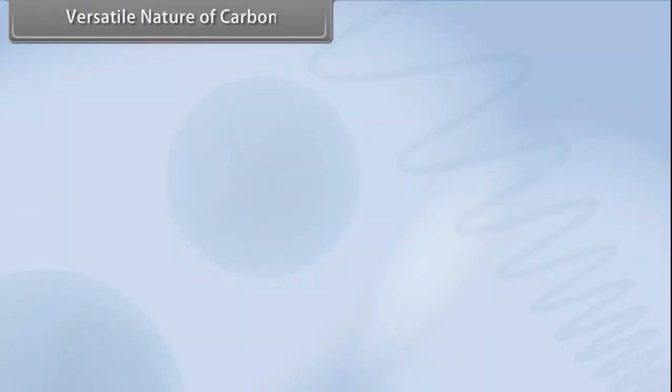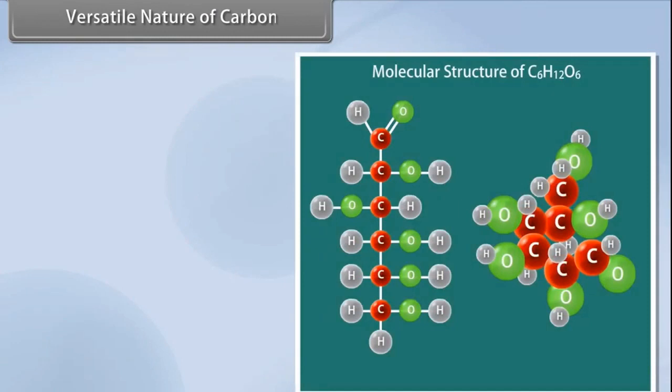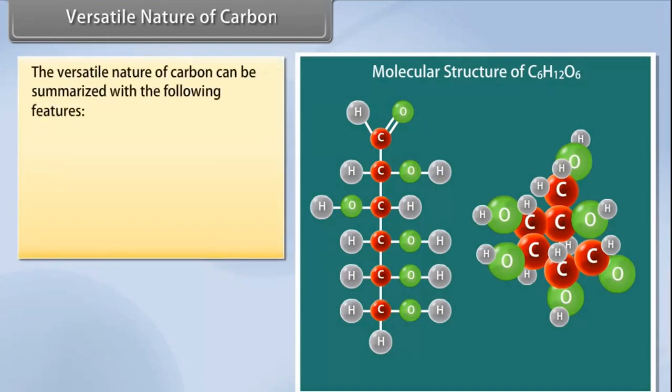Versatile nature of carbon. Organic compounds are made up of carbon, hydrogen, oxygen, and a few other elements. The unique nature of the carbon atom and the arrangement of the bonds carbon forms with other atoms enable formation of organic compounds.